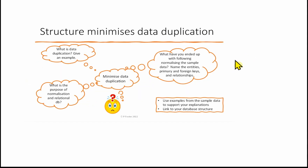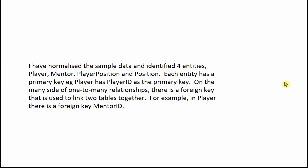The final paragraph of this part covers what you've ended up with following normalisation of the sample data, naming the entities, primary keys, foreign keys, and relationships. I've normalised the sample data and identified four entities: player, mentor, player position, and position. Each entity has a primary key — for example, player has player ID as its primary key. On the many side of a one-to-many relationship, there is a foreign key used to link two tables. For example, in the player table, there is a foreign key mentor ID.